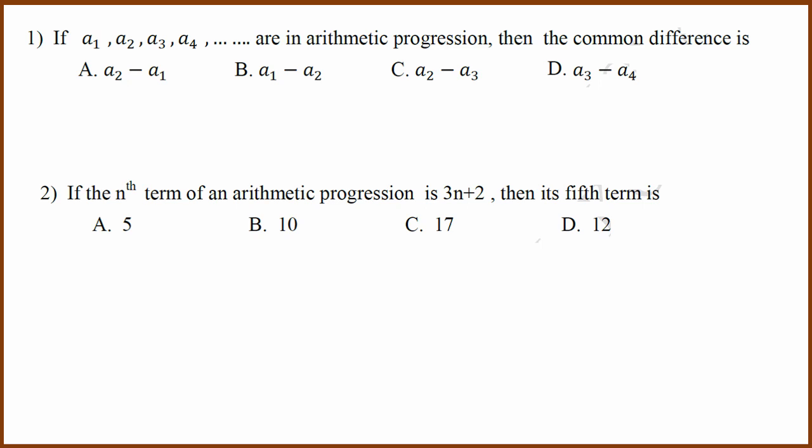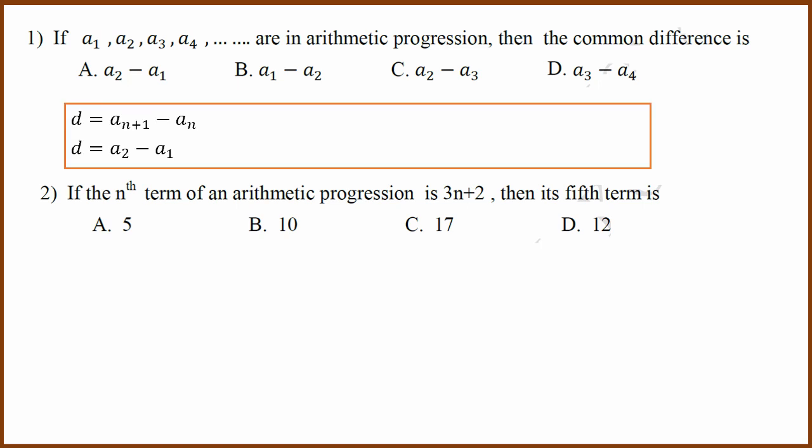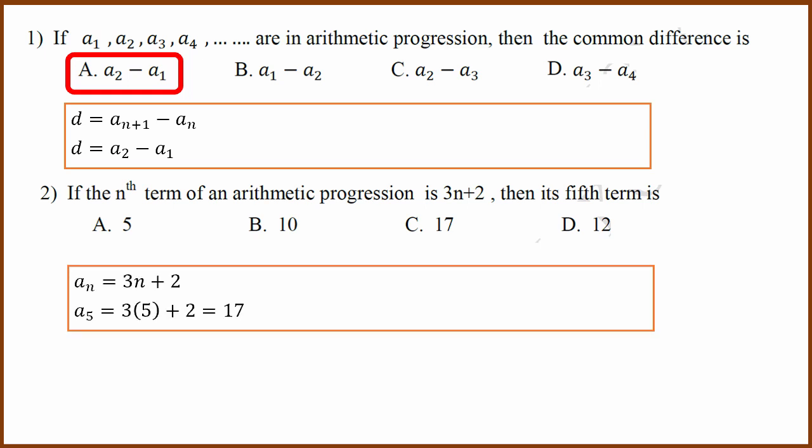First question: if a1, a2, a3, a4 are in arithmetic progression, then the common difference is the second term minus the first term. So the answer is A. Second question: if the nth term of the progression is 3n plus 2, then its fifth term is found by substituting n equals 5, which gives 17. Answer C.